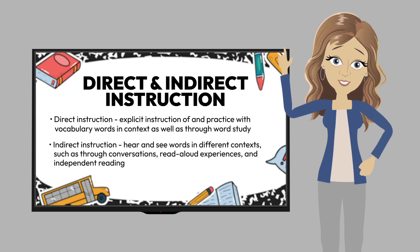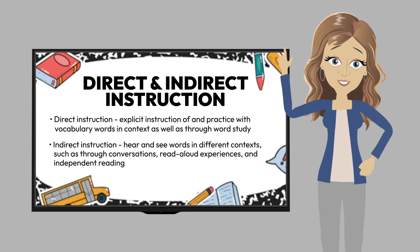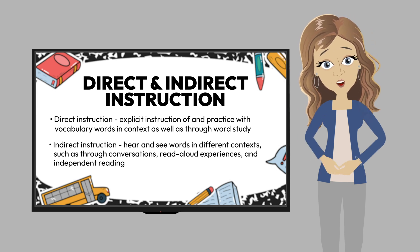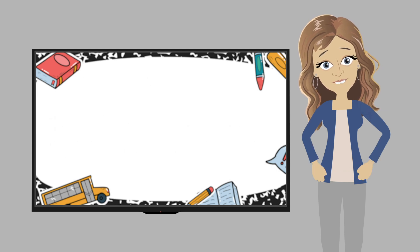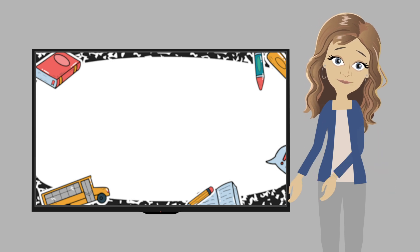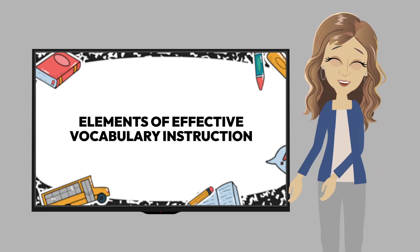There are not enough instructional minutes in the day to teach all the words students need to know, so incidental exposures at school and at home can occur through reading a wide variety of texts. As you plan those opportunities for direct and indirect instruction, you also need to keep in mind the five elements of effective vocabulary instruction.